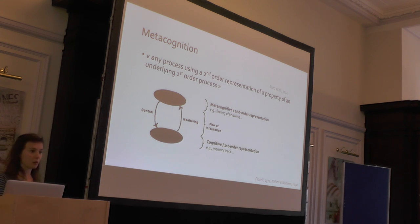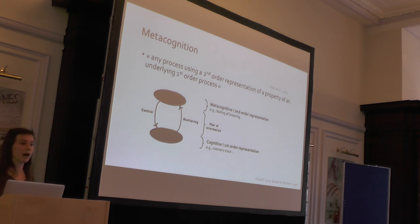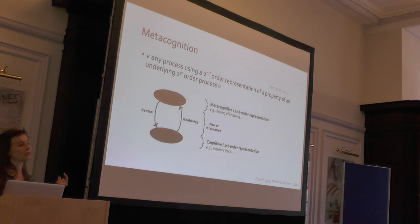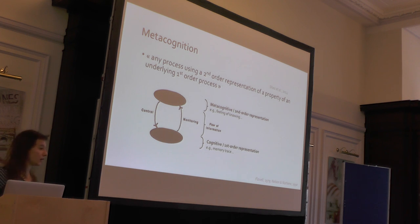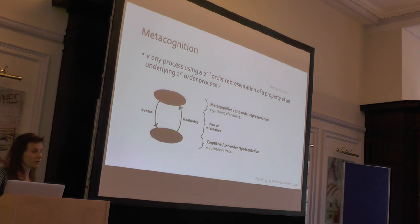Let me take a concrete example. Imagine my friend is texting me right now asking where I am, so I need to recover the address. I think we're on Tavistock Square, but I'm not super sure. The information I recall comes with a degree of reliability that I can estimate, and I can use this to decide whether to respond to my friend straight away or go on Google Maps to check the address. That is an example of a behavior relying on metacognitive processes.